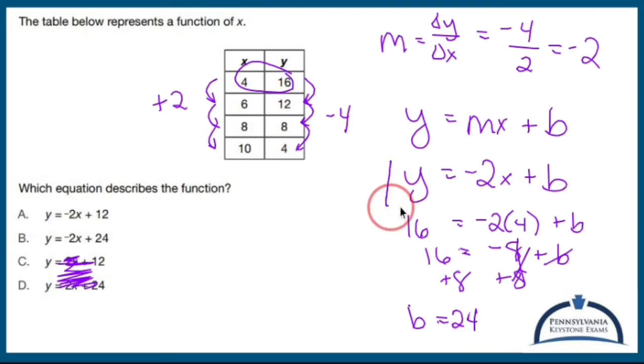So now that I already knew that y was negative two x plus b, and I just found out that b is 24, I can combine them both to make y equals negative two x plus b, which is positive 24.